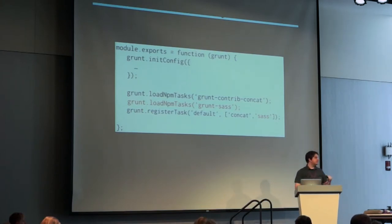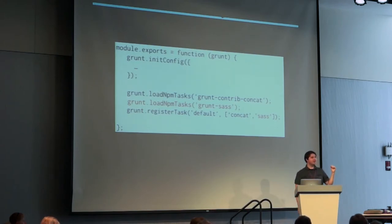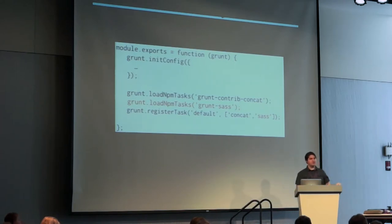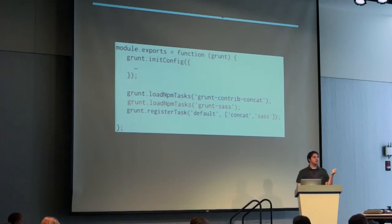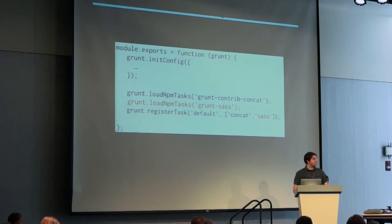Let's look back at our Gruntfile.js. Again, the first thing you do after you install a plugin is you add this loadNpmTasks line with the plugin name. There's actually a Grunt plugin that will automatically do those loadNpmTasks for you — Grunt is so efficient it makes itself more efficient. It'll load any plugin listed in your package.json file. The other change I made is under our registerTask for default, I added a new task called 'sass.' So now when I type grunt on the command line, I want to run both the concatenation task and the Sass task.